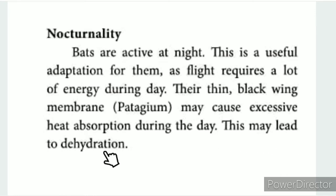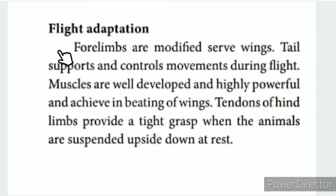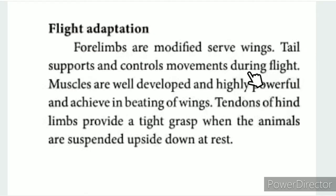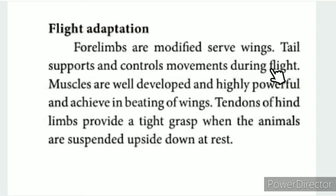This may lead to dehydration during the day. The bat has four limbs with wings that are hard. The tail provides control and support, and facilitates speed — similar to how a bike or car uses it. The tail is a natural adaptation. The bat has highly powerful muscles for beating of wings.